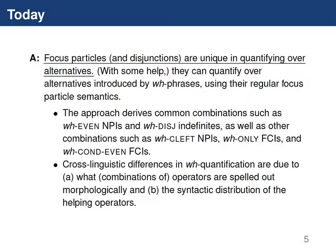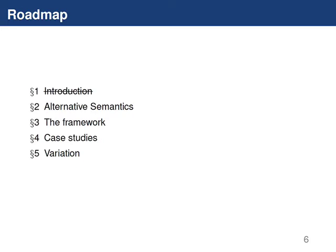I claim there are at least two major ways that languages vary. First, in what operators or combinations of operators are spelled out morphologically when we observe something that looks like a focus particle or a disjunctor. And second, the syntactic distribution of the so-called helping operators can also vary across languages. Here's the basic roadmap: we'll talk about background on alternative semantics, I'll present my framework in a sketch, then spend most of the time going through various case studies, and finally I'll conclude with some thoughts on how languages vary.